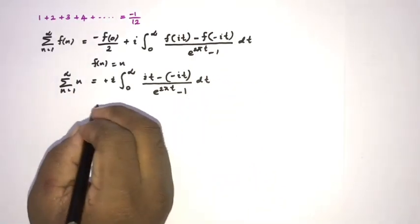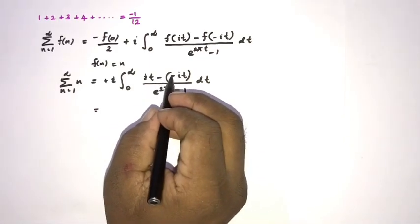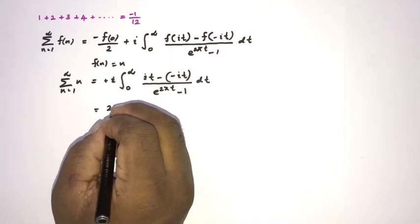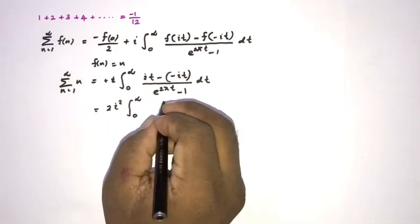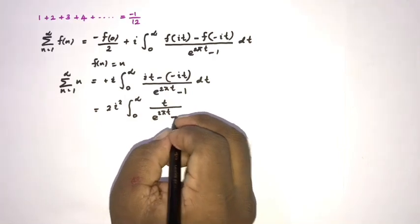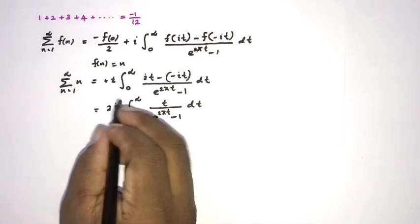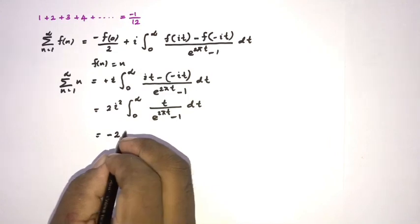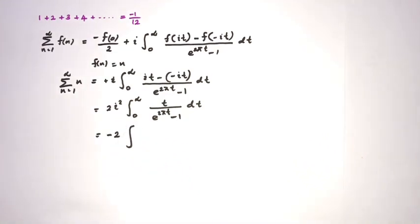We simplify: it minus (-it) gives 2it. We can write 2i²t, and since i² = -1, this becomes -2t over (e^(2πt) - 1) dt.